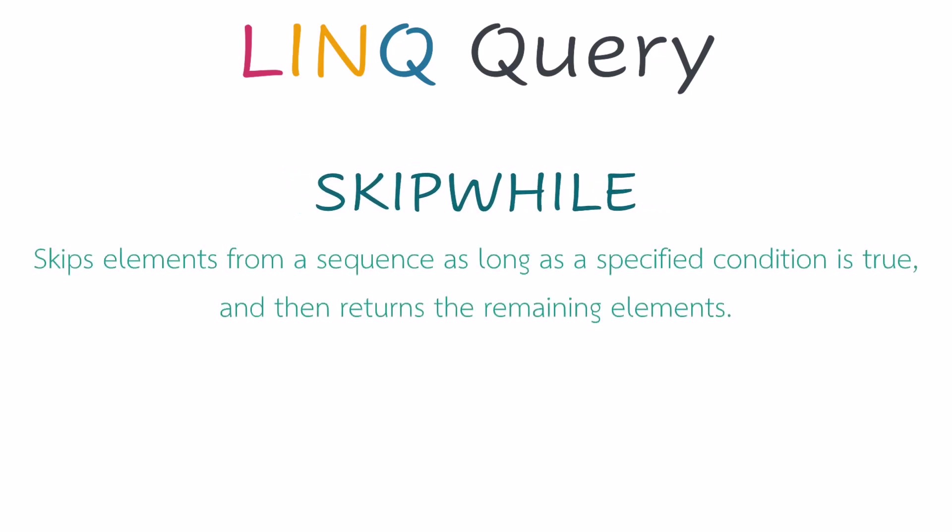SkipWhile skips elements from a sequence as long as a specified condition is true, and then returns the remaining elements. It means we set a condition for this function. As long as this condition is true, we skip the elements from the data source. Once the condition is false, the remaining elements will be returned as output.